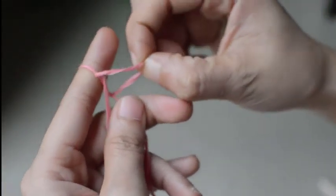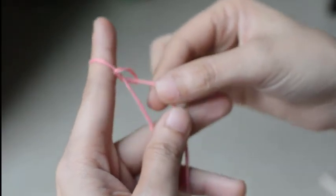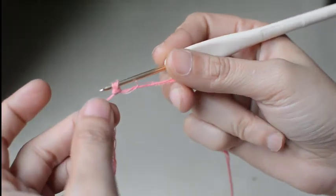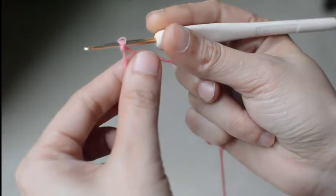And then, this is now your sleep knot. The amazing thing about sleep knot is that they are adjustable. Meaning, you can just grab the tail of the yarn to tighten the knot.